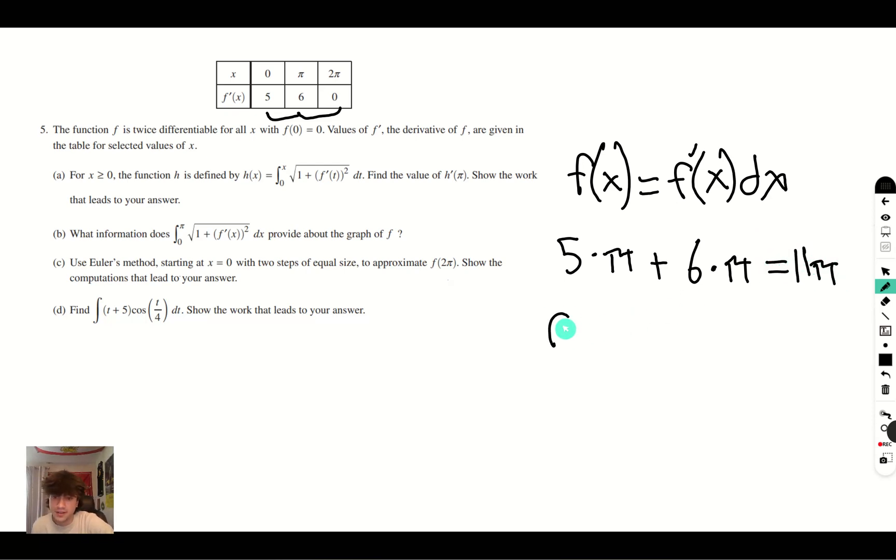So there you have it. That's what f(2π) is going to be. It's going to be approximately 11π.